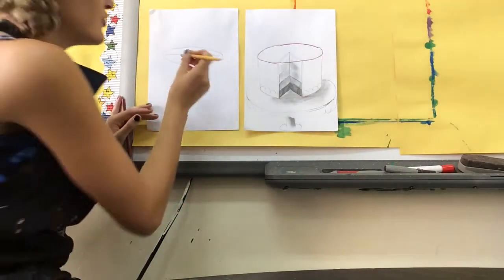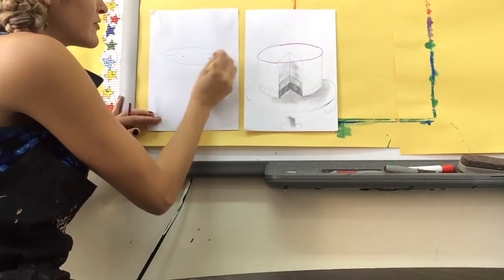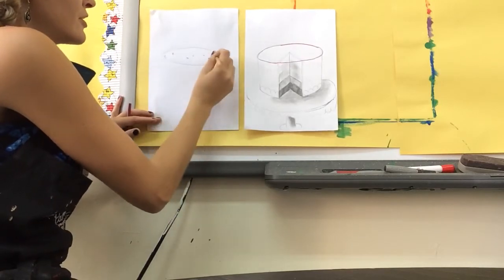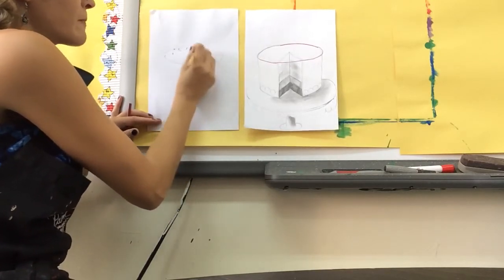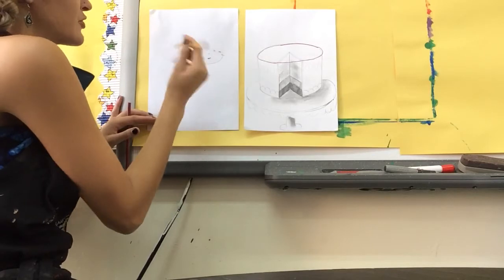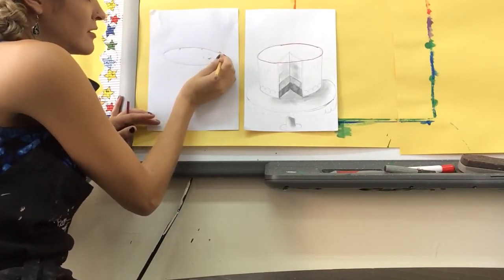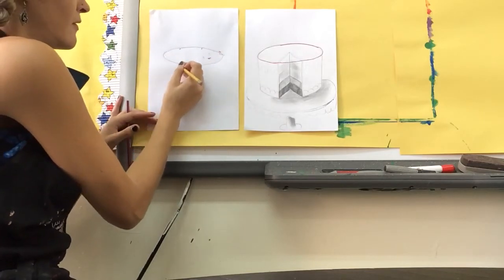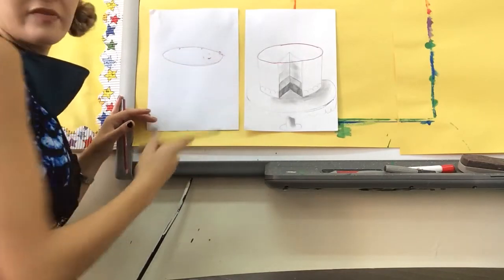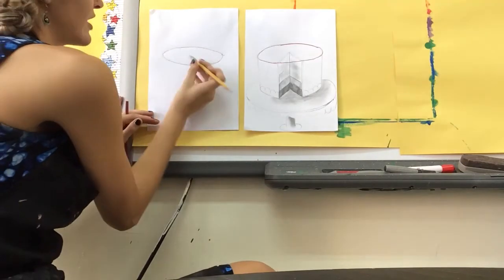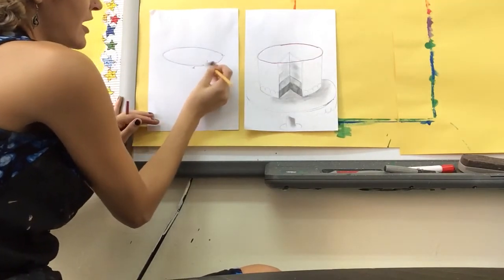Then you can erase out the middle line from the center because it was just a guideline. You can take some time to touch up your ellipse and make sure it's rounded. So that's the ellipse for the top of the cake.